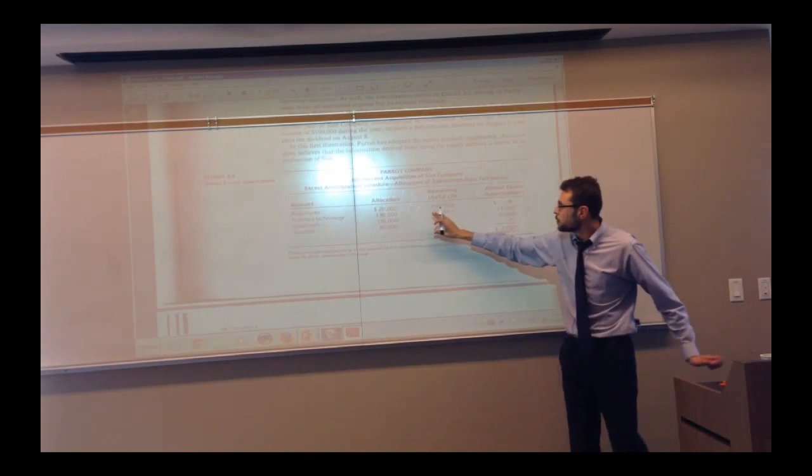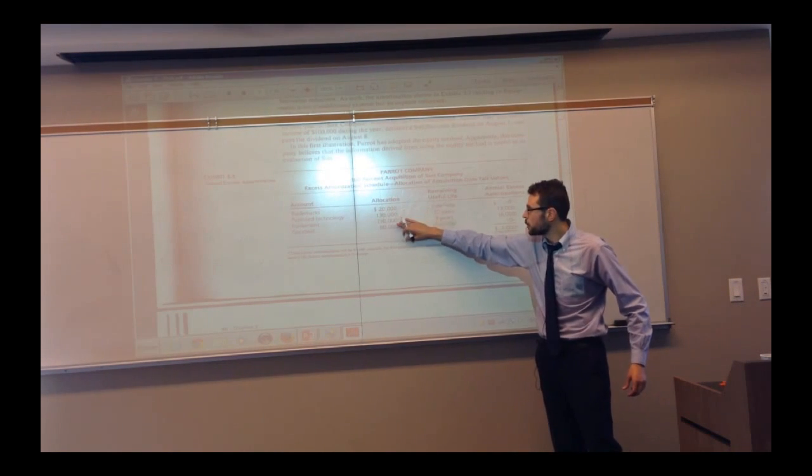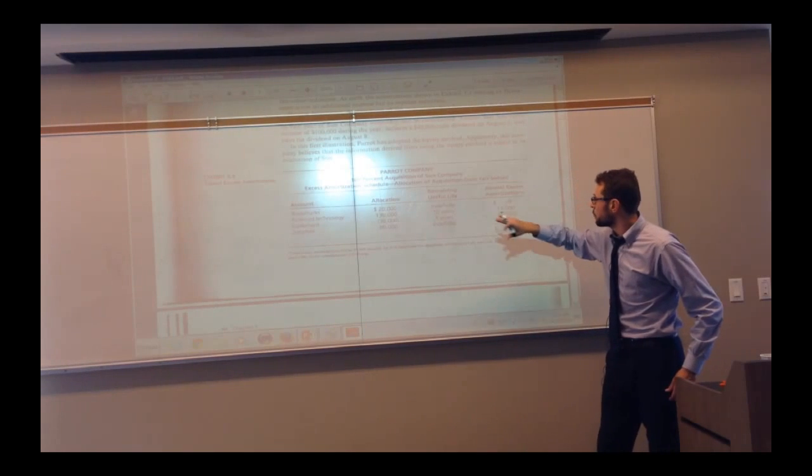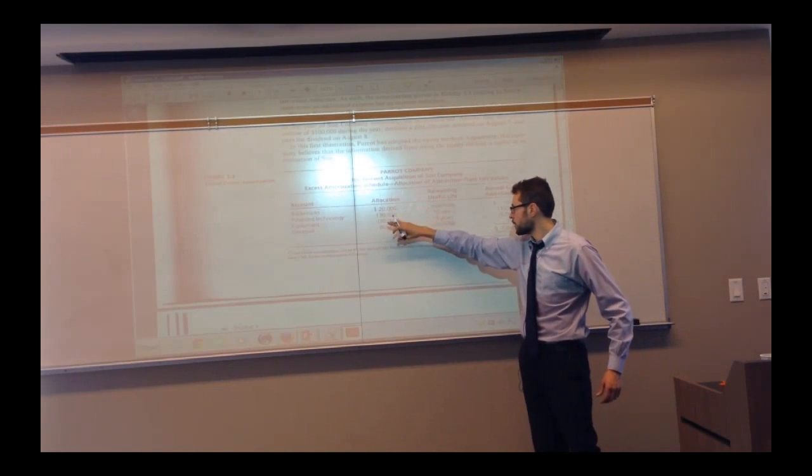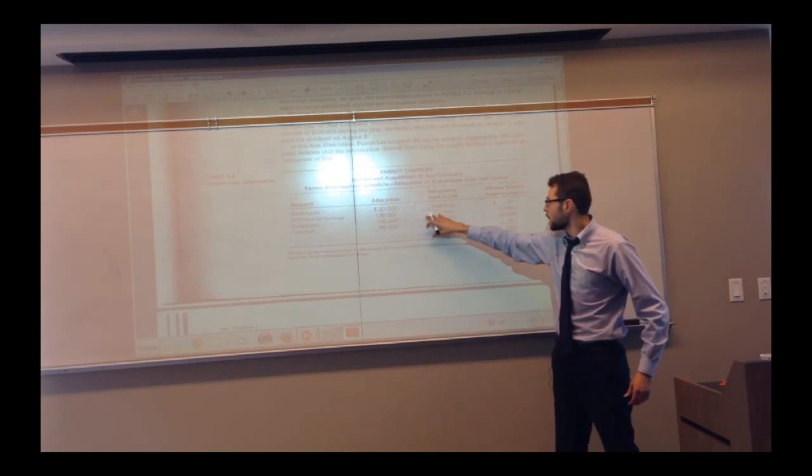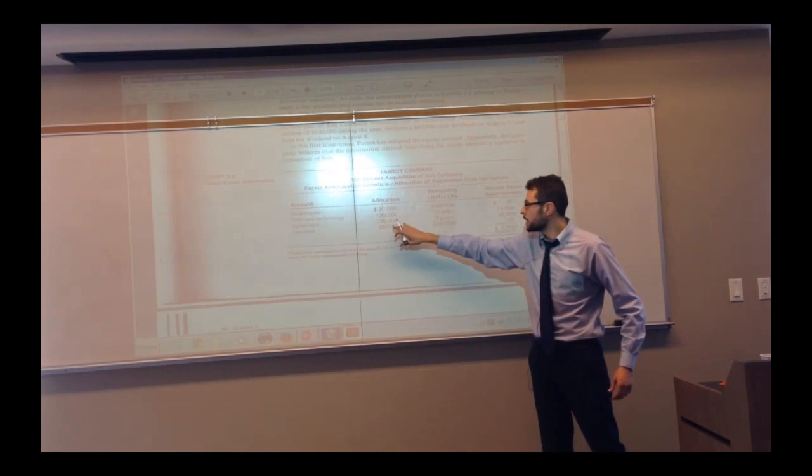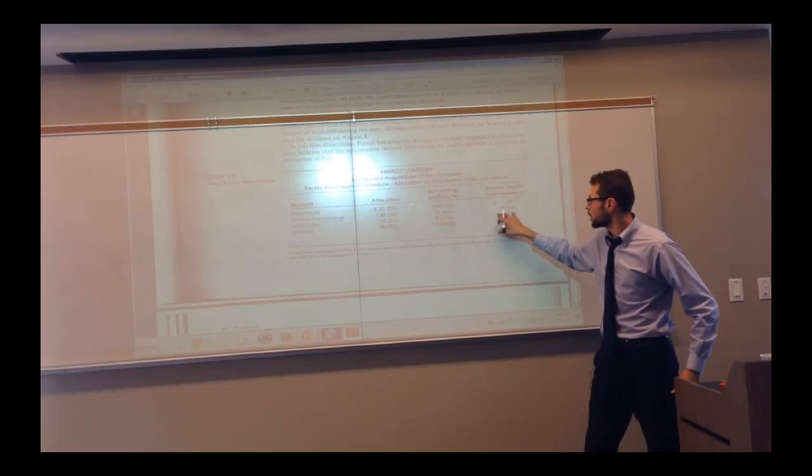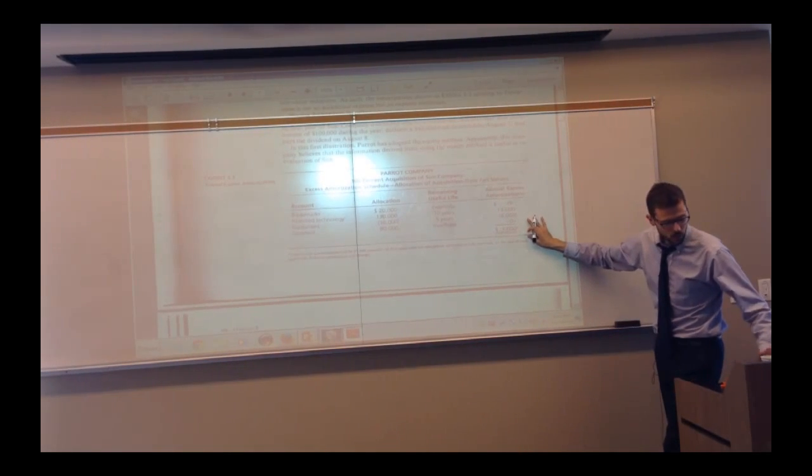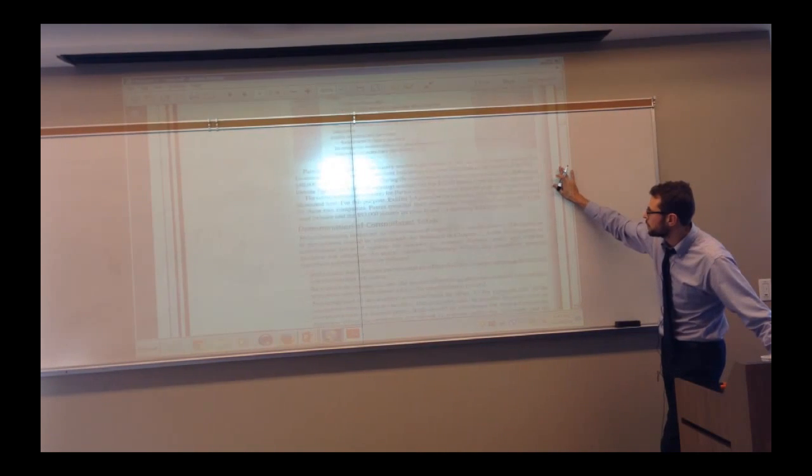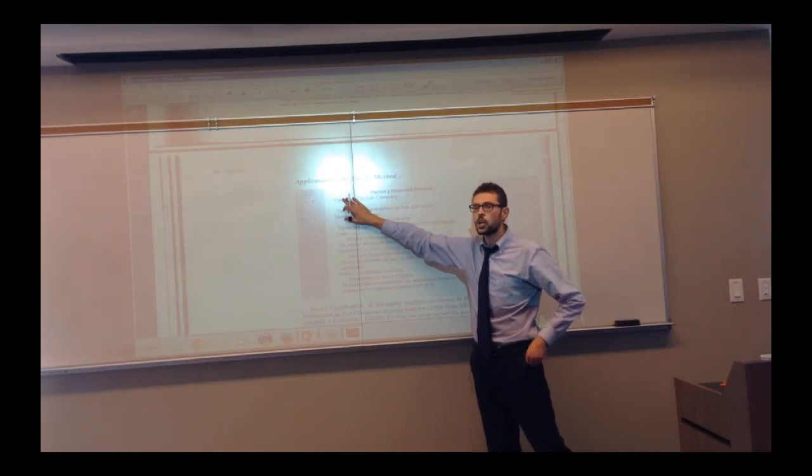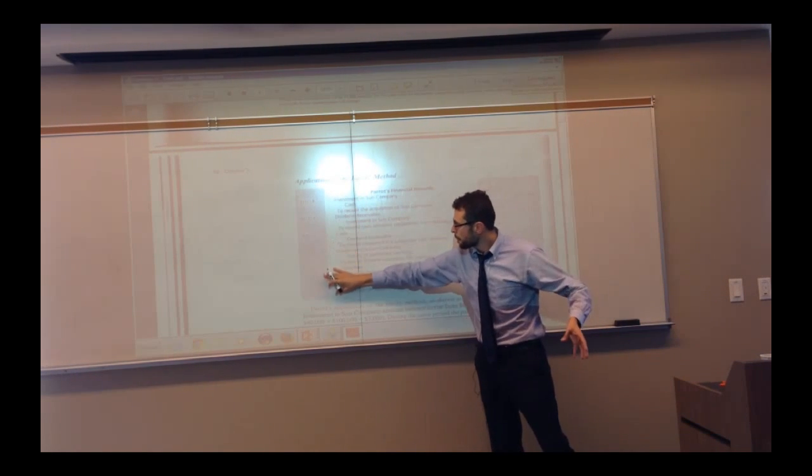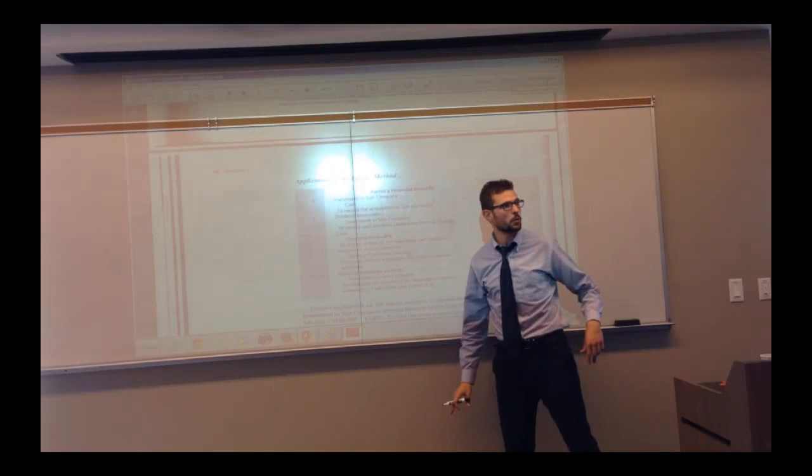Out of the assets that we got that were above book value, we realized that trademarks had an indefinite life after acquisition. Patent and technology had a 10-year life, and the equipment devaluation of $30,000 had a 5-year life. So we're going to amortize those assets. In the year post-acquisition, we started on January 1, 2014, and the year ended on December 31, 2014.